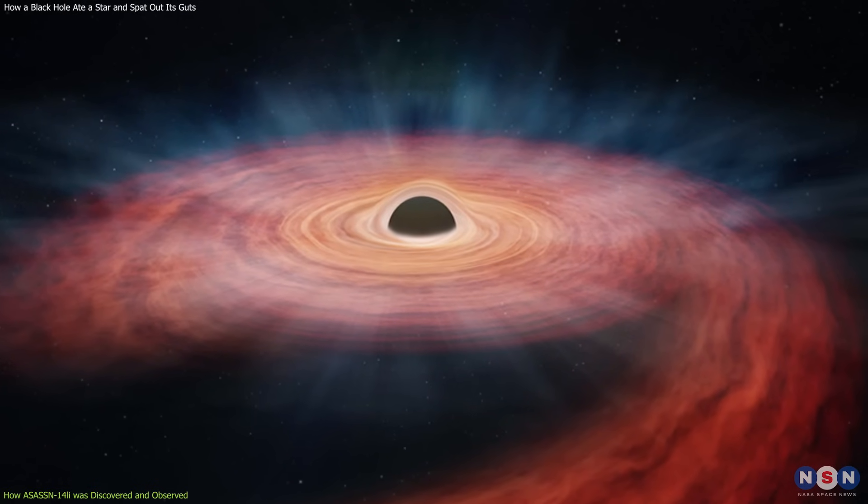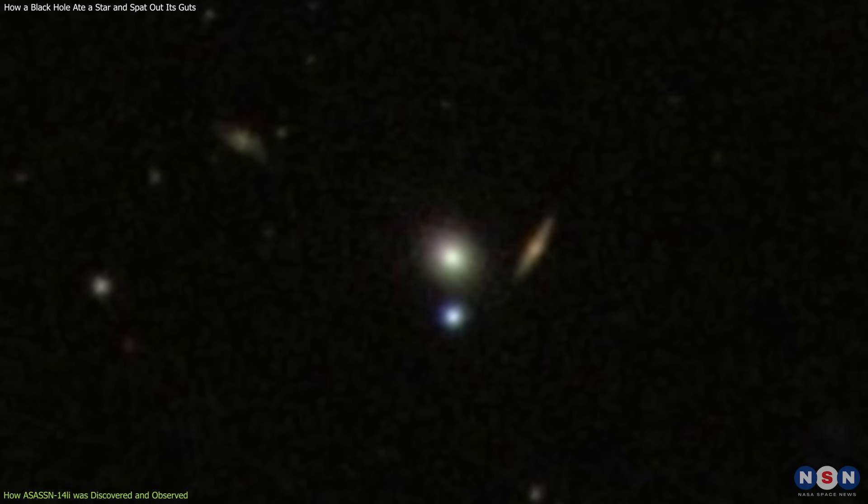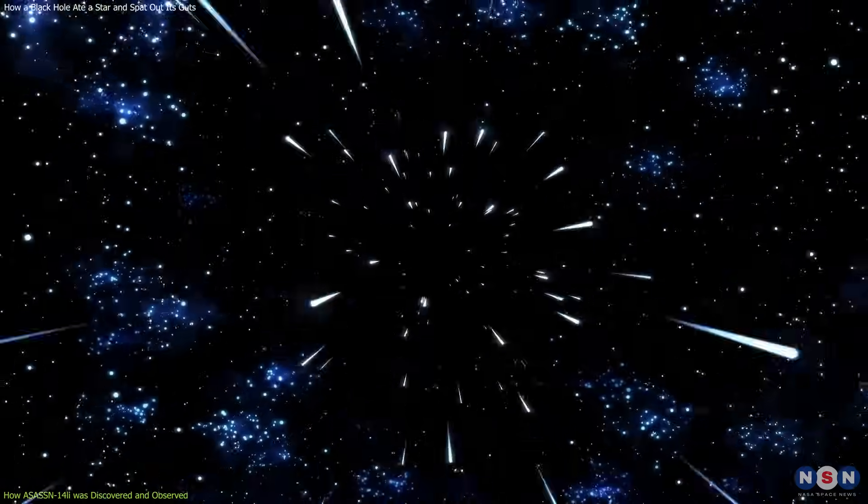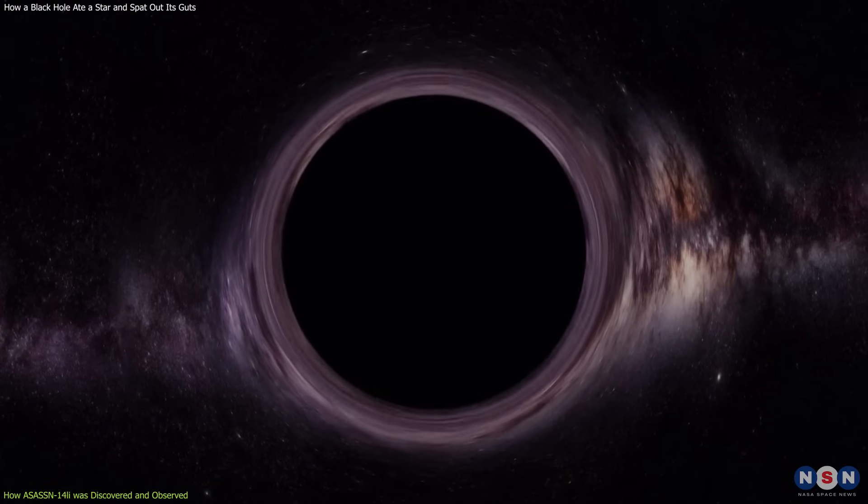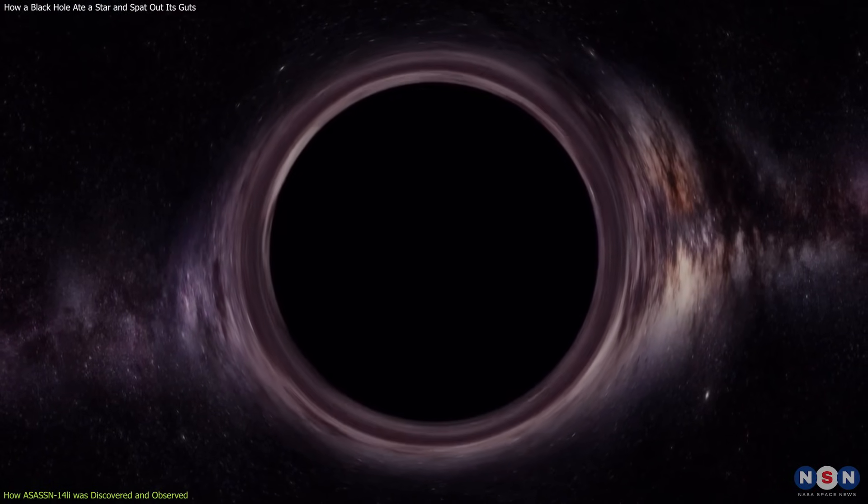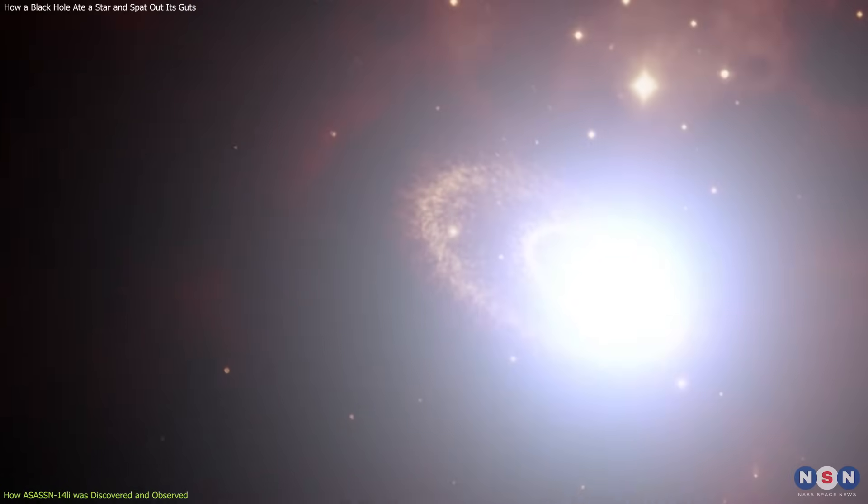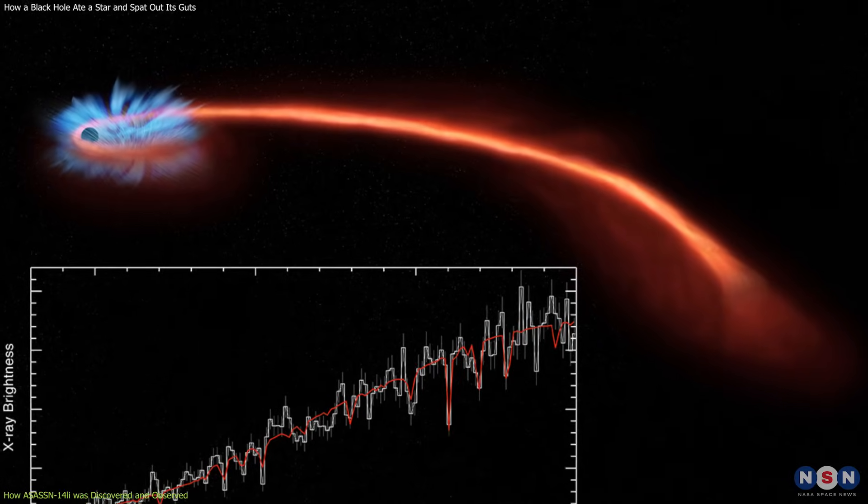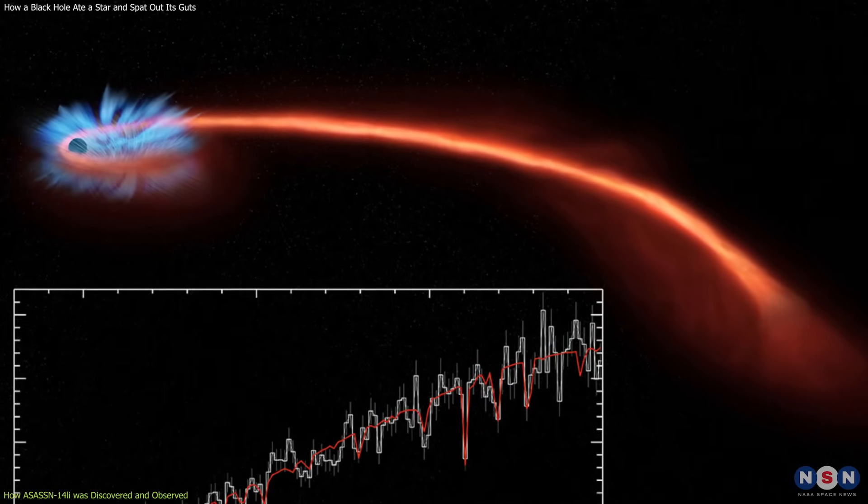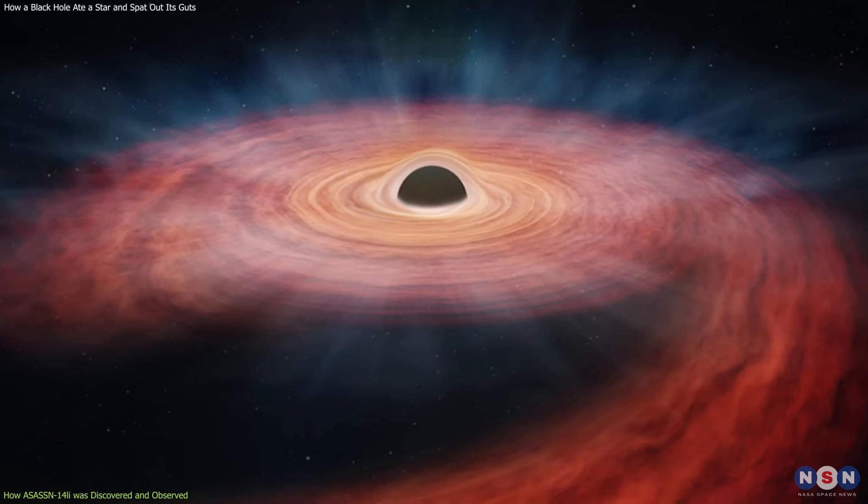ASASN-14Li was located in a galaxy called PGC-043234, which is about 290 million light-years away from Earth. It was caused by a supermassive black hole with a mass of about 20 million times that of the Sun, which devoured a star with a mass of about 25 times that of the Sun. ASASN-14Li was one of the closest TDEs to Earth ever detected, which made it possible to study it in great detail with various telescopes.